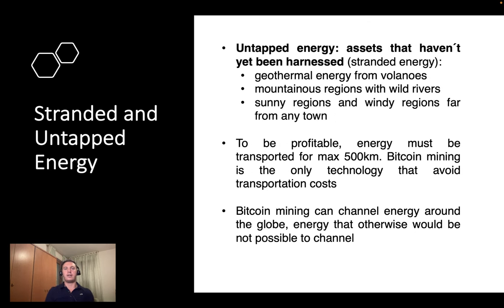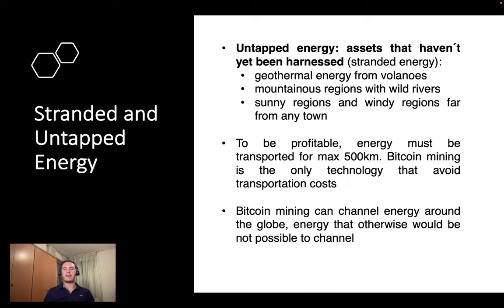Now let's focus on untapped and stranded energy. These are energy assets that haven't been harnessed yet — also called stranded energy. Examples include geothermal energy from volcanoes, rivers in mountainous regions, sunny regions, and wind regions far away from any town. To be profitable, energy must currently be transported a maximum of about 500 kilometers. Bitcoin mining is the only technology that avoids transportation costs and can channel energy around the globe that would otherwise be impossible to use.